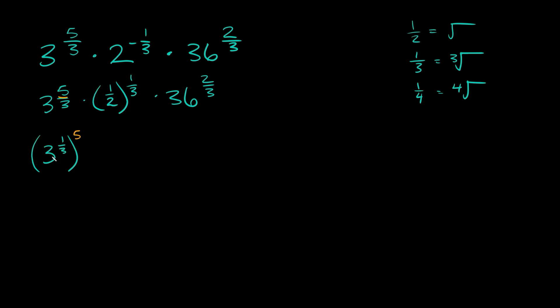So here we have 3 raised to the 1 third raised to the 5th power, and then we're multiplying that by 1 half raised to the 1 third power, and then this guy we can break up the same way we did this guy. So we can say times 36 raised to the 1 third, and then the 2 that we took out we'll bring out here.